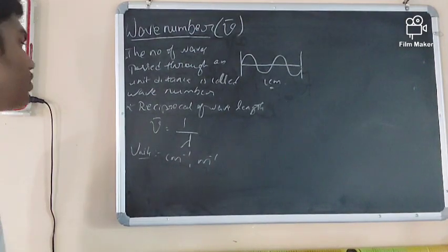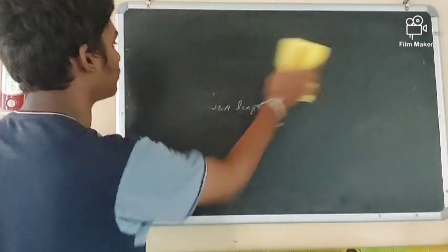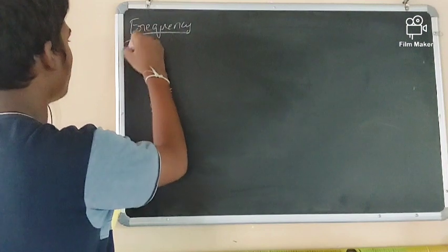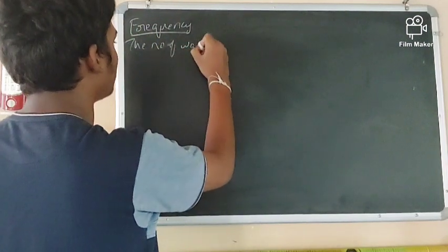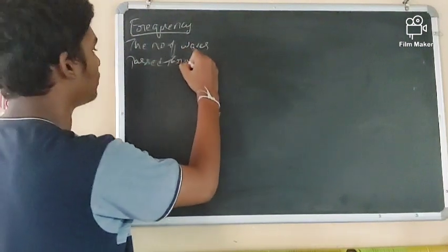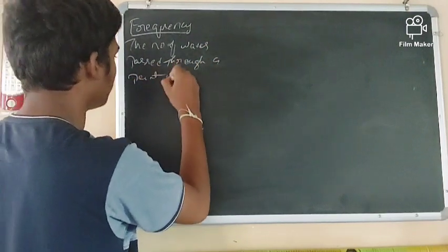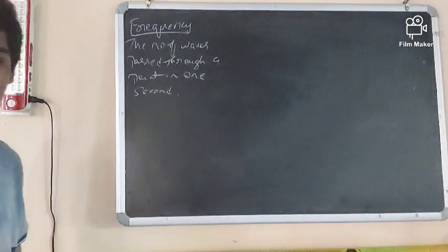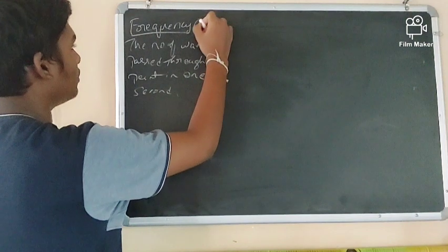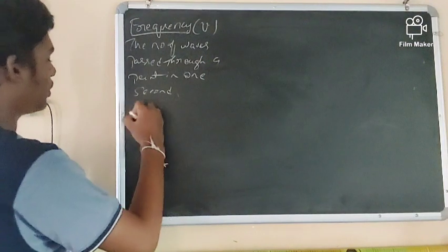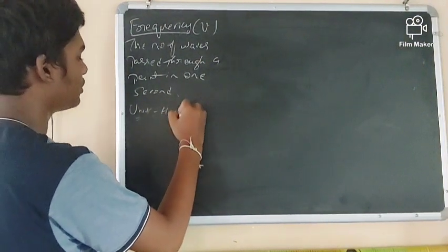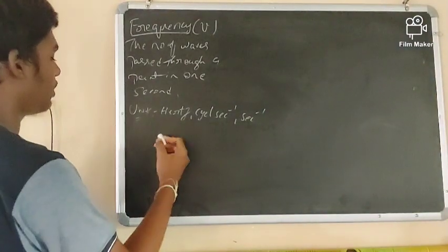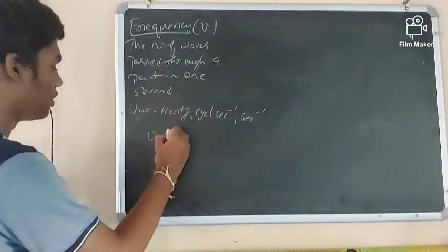Now let us discuss frequency. The number of waves passing through a point in one second is called frequency. It is denoted by nu (ν). The units are hertz (Hz), cycles per second, or s⁻¹. Frequency is inversely proportional to wavelength (λ).